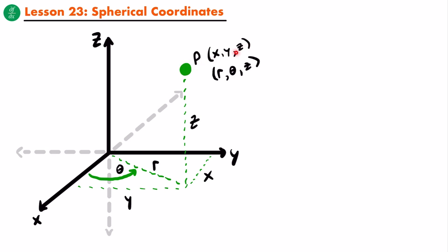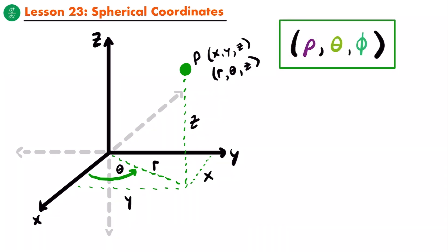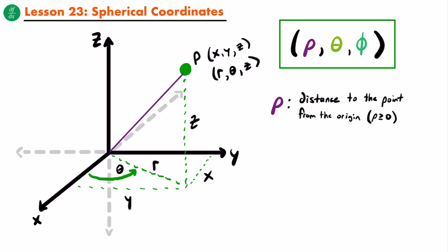That's how we would plot a point in rectangular coordinates and in cylindrical coordinates. Now let's talk about spherical coordinates. Spherical coordinates will look like this — we still have an ordered triple, where the first coordinate is represented by the Greek letter rho, which sort of looks like a lowercase p. What this coordinate represents is the distance from the origin directly to the point in 3D space. You could draw a line segment from the origin to the point, and that would represent rho for a set of spherical coordinates.